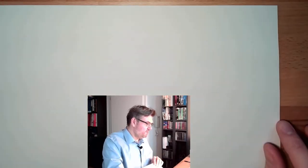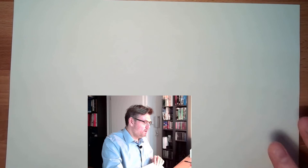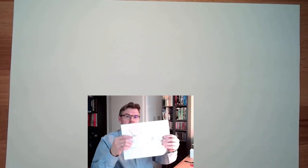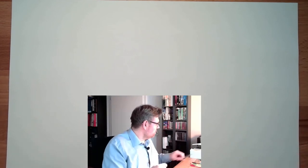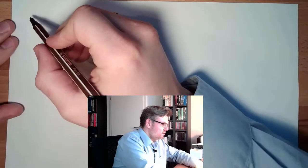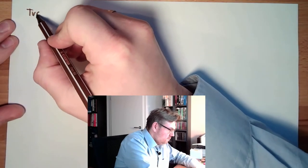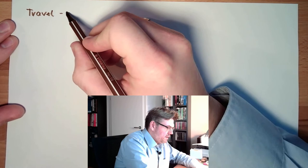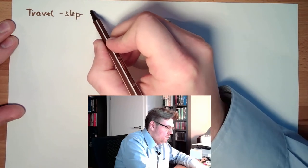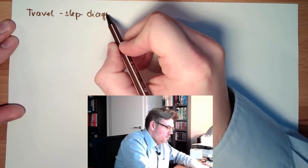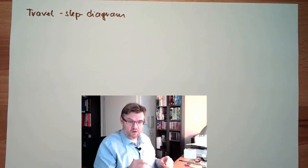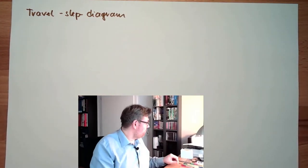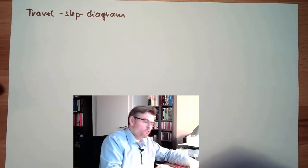One possibility of this, I hope you can keep this in mind, this drawing here. One possibility is the so-called travel step diagram. For each and every drive, there are two of them, right? For each and every drive, there is a grid.